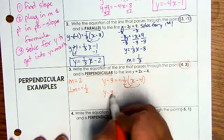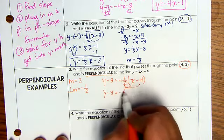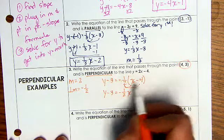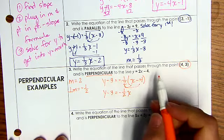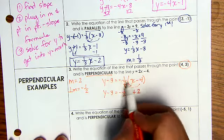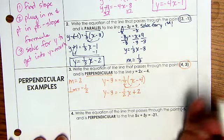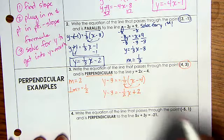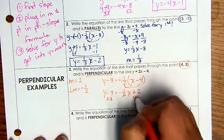I have y minus 3 equals negative 1 half x, negative 1 half times negative 4. That's going to give me a positive 2. That's 4 divided by 2 is 2, and negative times negative is a positive.